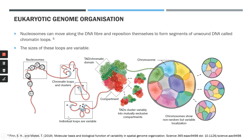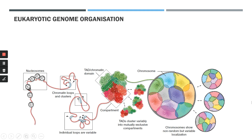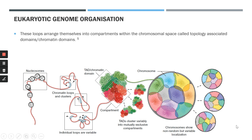These loops can have variable sizes, and nucleosomes can be shifted around to alter and vary the sizes of these loops along specific strands of DNA. We now know that individual chromatin loops or clusters of chromatin loops can arrange themselves to specific positions within chromosomal space. These specific positions are called topology-associated domains, or TADs, representing specific loops of chromatin associated with different points or compartments within the chromosome.